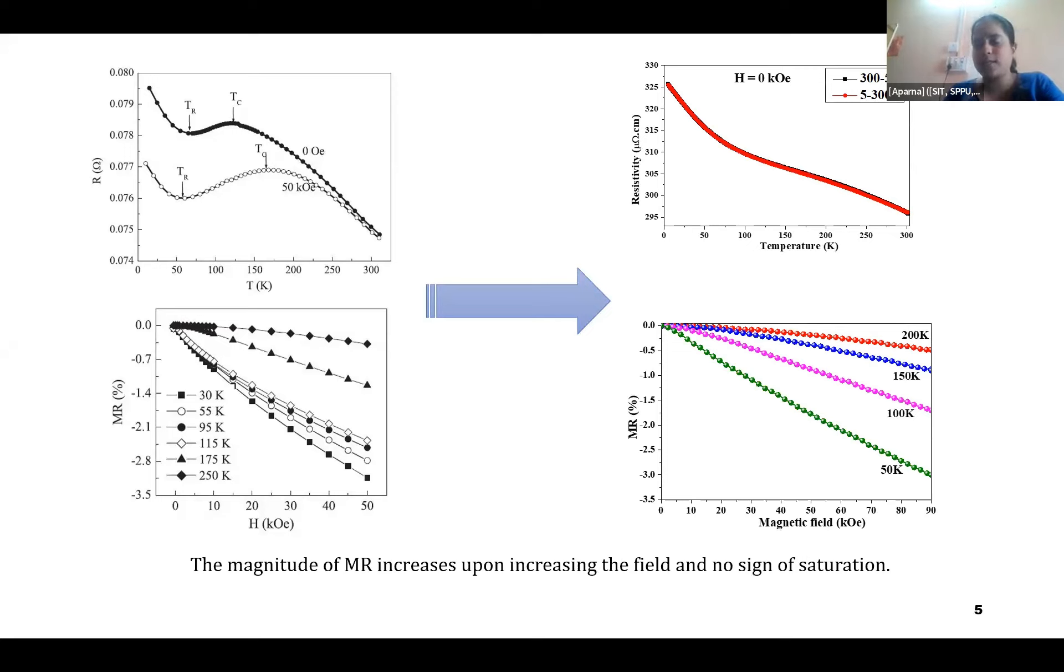Here in the case of my sample also at zero field without the application of any external magnetic field, the resistivity, even though it seems to have a high resistance of 325 micro-ohm-centimeter, when it is compared with the magnetization data it shows that there is an existence of anti-ferro and ferromagnetic nature because it is not getting saturated at 300 Kelvin.